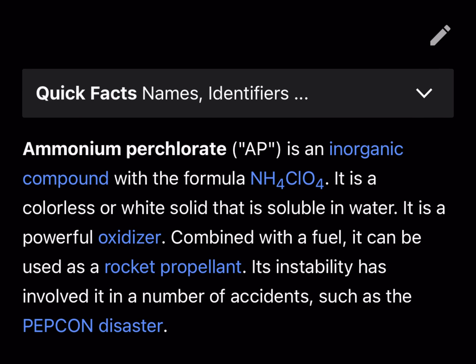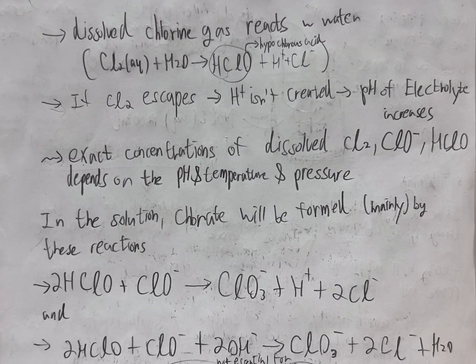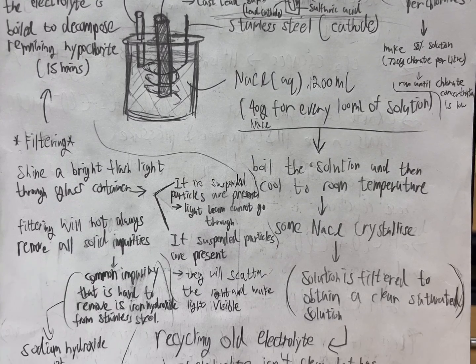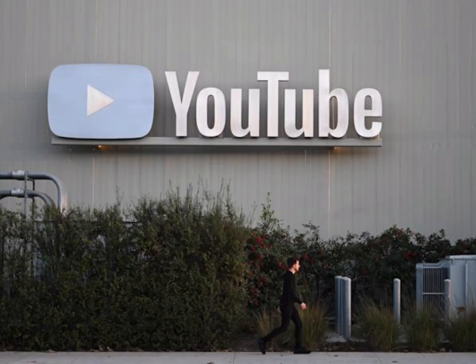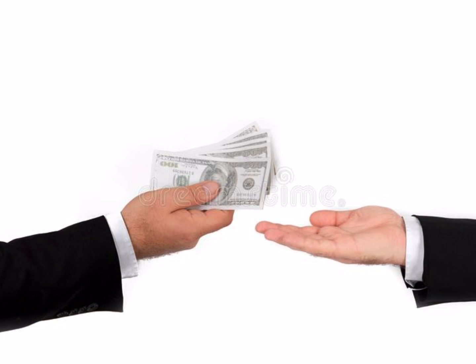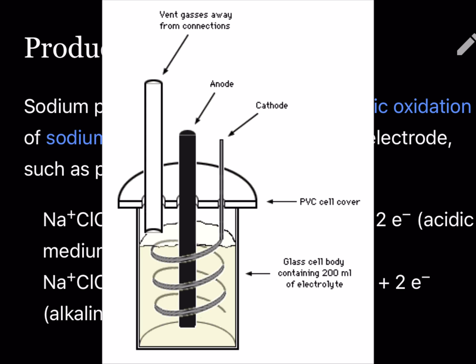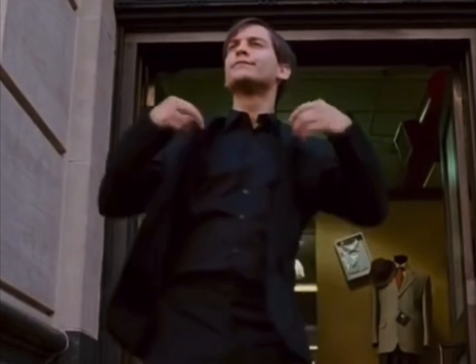Although perchlorate salts are one of the best oxidizers for rocketry, I don't recommend them for beginners. I'm also not going to give a step-by-step tutorial since both YouTube and the government dislike when people do that. But depending on your country, you might be able to just buy a bunch of it, and if not, it's apparently extremely easy to make.